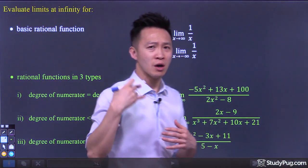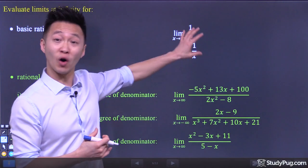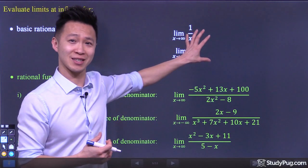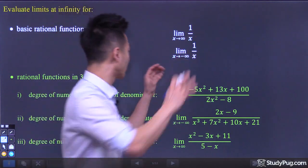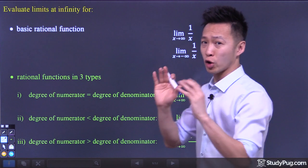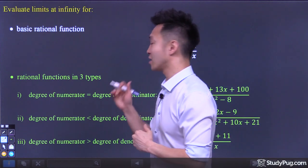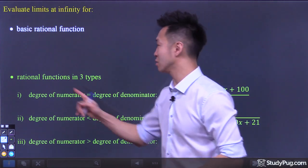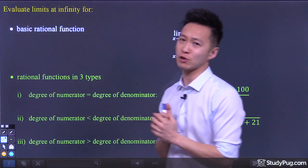Horizontal asymptotes are built on top of this. Then we're going to carry this idea forward to help us find the limits at infinity for rational functions.